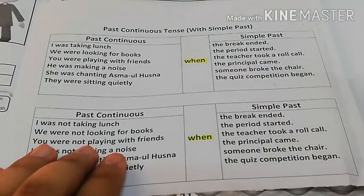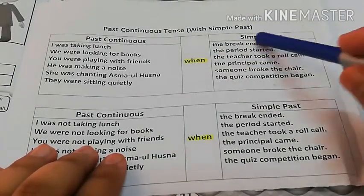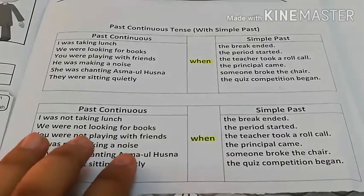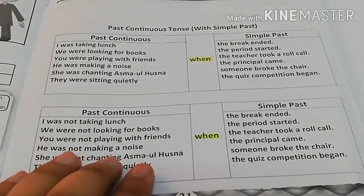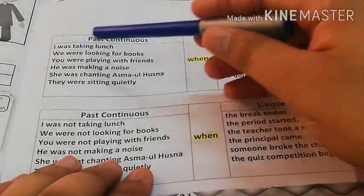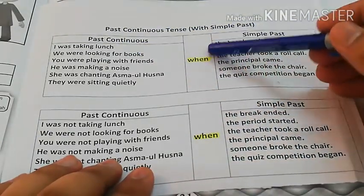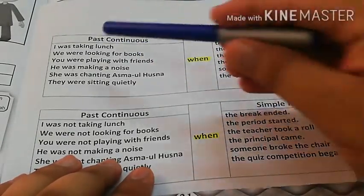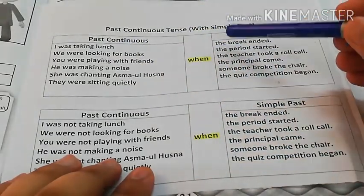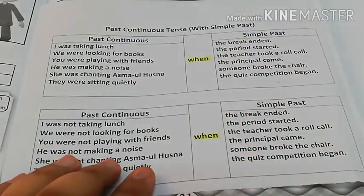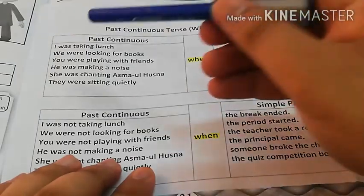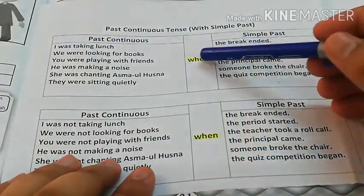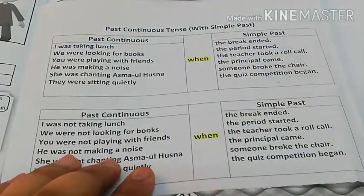Dear students, we will do the drill of this segment the same way, showing the reasons for interruption. Let's start the drill from sentence number two: 'We were looking for books when the break ended,' or 'We were looking for books when the period started,' or 'We were looking for books when the teacher took a roll call.'